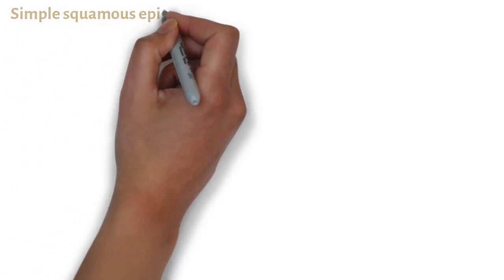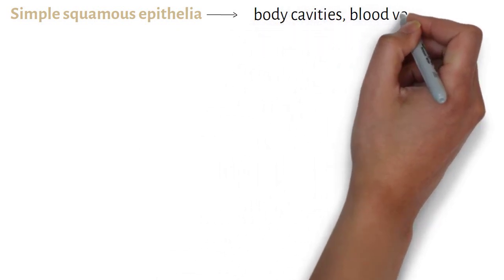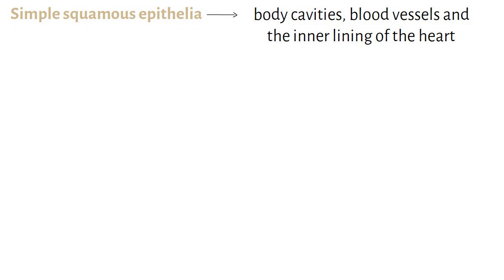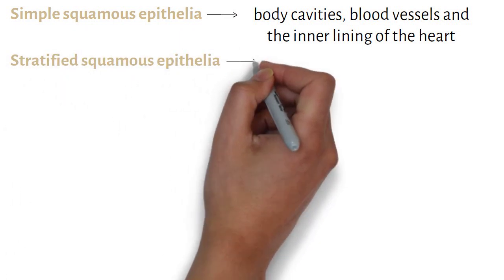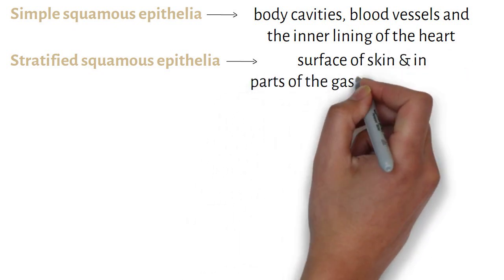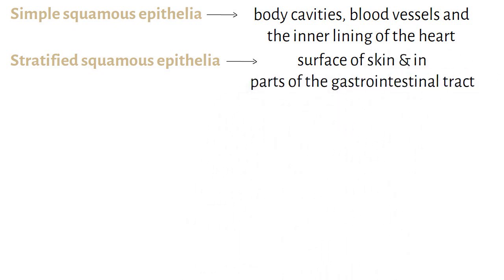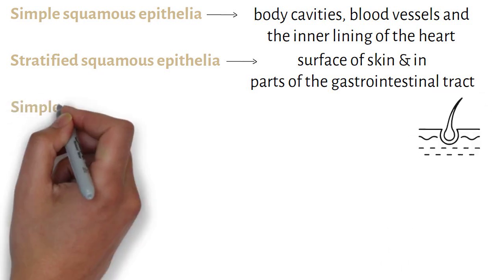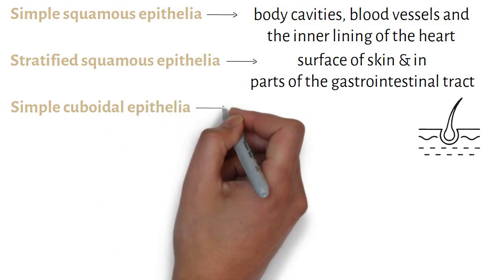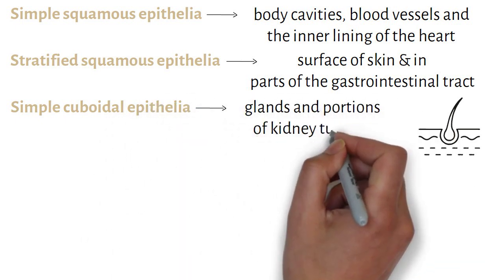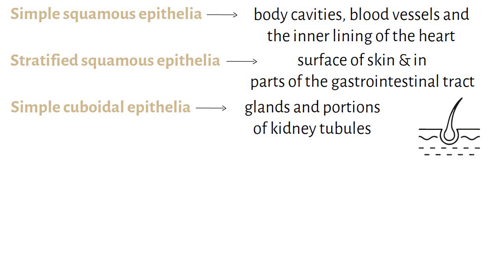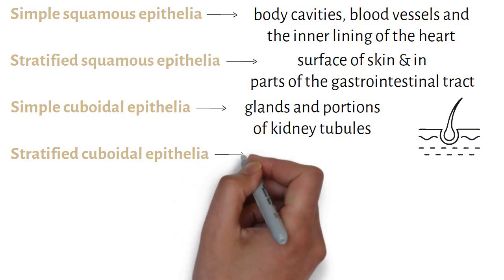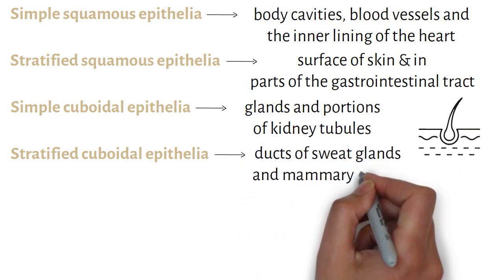Simple squamous epithelia lines body cavities, blood vessels, and the inner lining of the heart, and it's important for absorption and diffusion. Stratified squamous epithelia can be found on the surface of the skin and in parts of the gastrointestinal tract, protecting against mechanical stresses, and it contains keratin that adds strength and water resistance. Simple cuboidal epithelia is located in glands and portions of kidney tubules, important for secretion and absorption. Stratified cuboidal epithelia is relatively rare but can be found in ducts of sweat glands and mammary glands for secretion and protection.